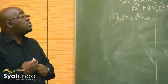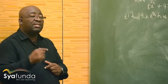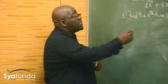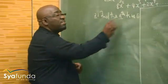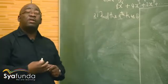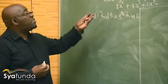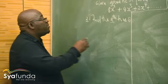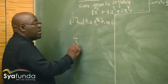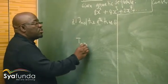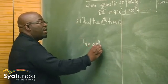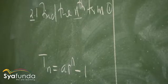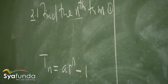Remember, the nth term is the general term — in other words, it's Tn. Whenever you see the word nth term, it is Tn. Do we know the nth term for the geometric sequence? Yes, we know it from the formula: Tn equals ar to the power n minus 1. So that's what we are looking for — the general term, the nth term.